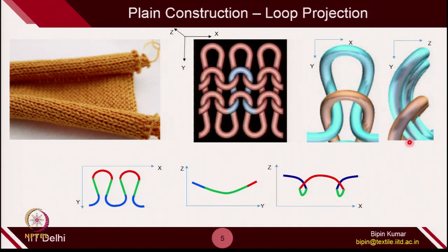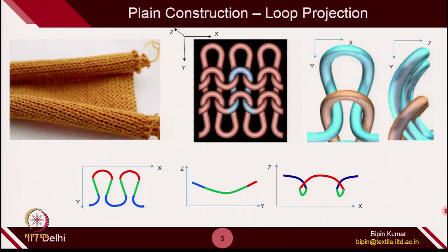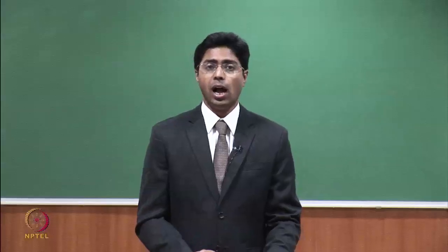In plain constructions, we have also given emphasis on the loop projection. If you see the nature of the loop, the yarn is actually bent not only in the XY plane, but also in other planes like the ZX and ZY planes. In the XY plane, you can see it is bent in a loop form. But in the ZY plane also, the nature of the loop is in a bent form. This is why the yarn will try to go back to its original straight configuration — which is the reason why the curling happens.